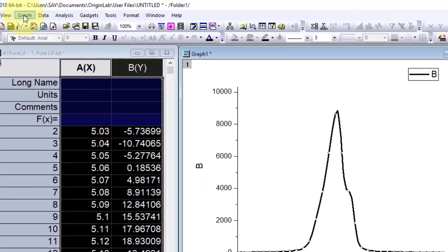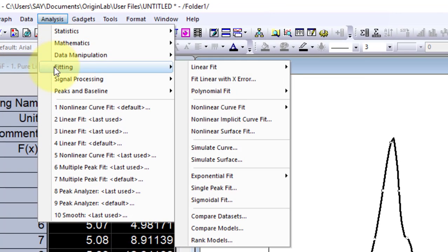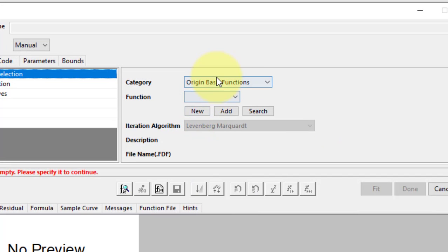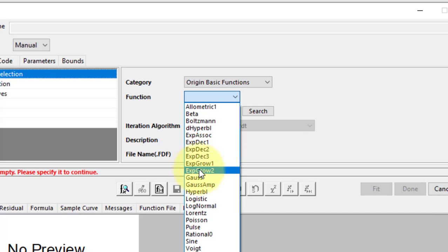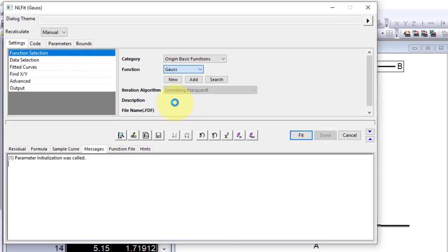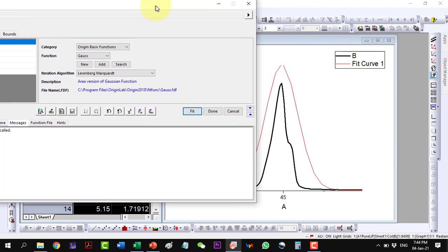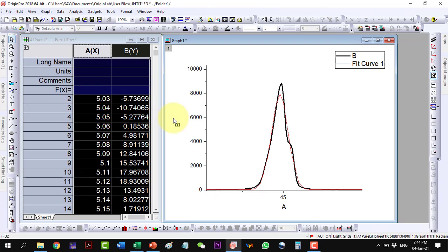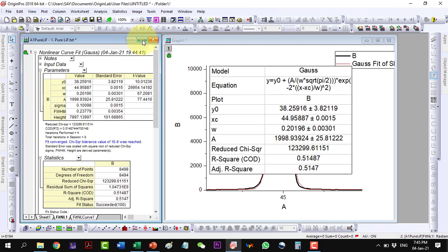Select this peak, go to analysis, then fitting, and go to non-linear fit and open the dialog. We have the origin basic functions, go to the Gaussian function and here it will show a preview. I will fit it and click fit until converge. Here is the fit, so I will click okay and here are the values.